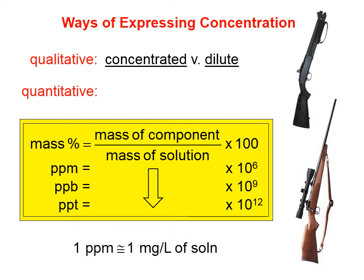A piece of trivia: one part per million is approximately equal to one milligram of that substance per liter of solution. So if we have calcium ions in a solution present at three parts per million, that means there are about three milligrams for every liter of solution.